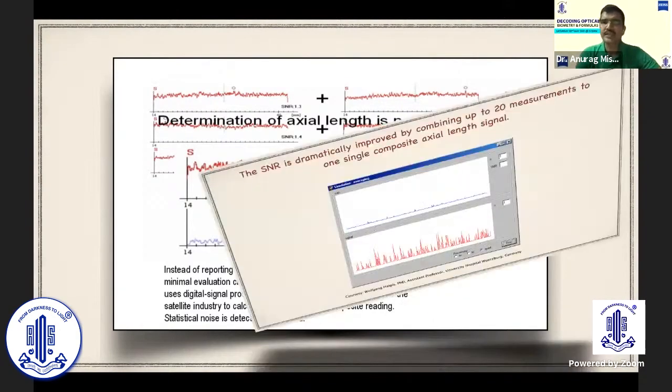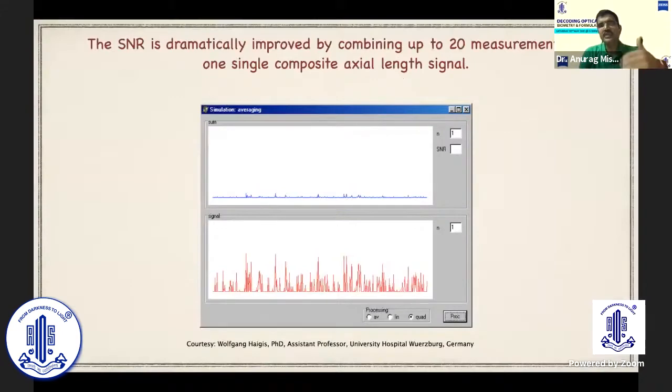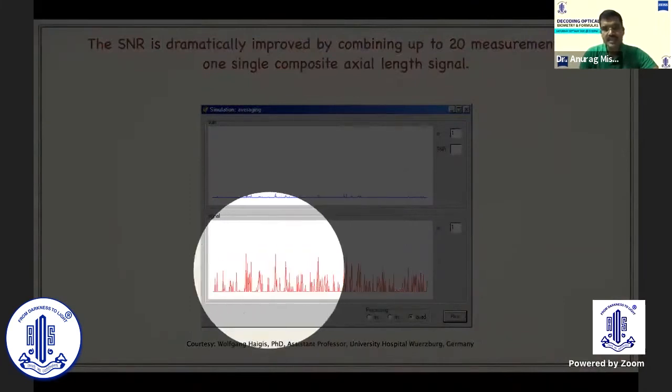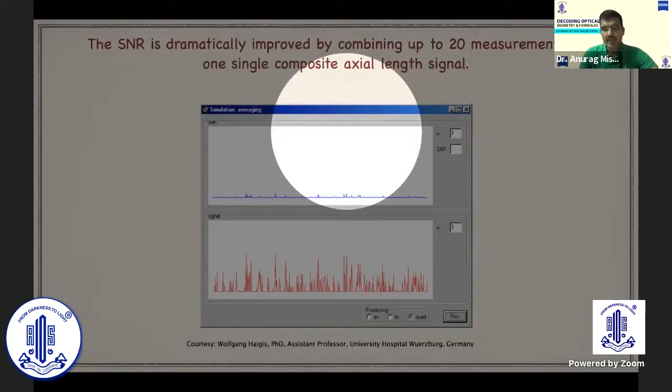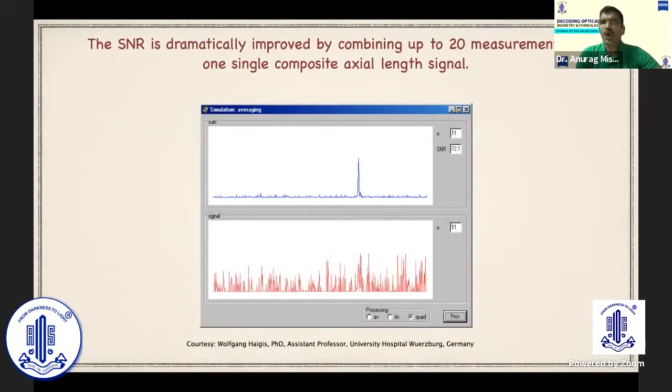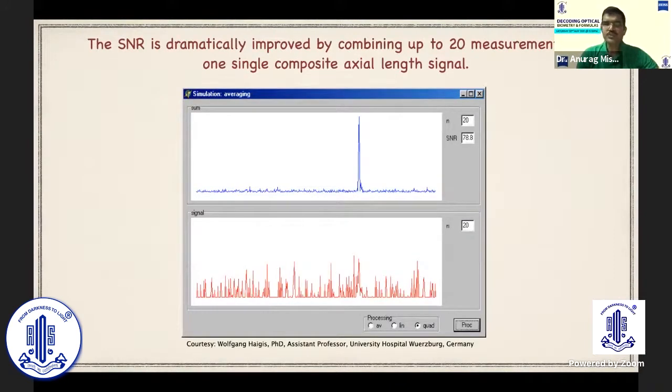It will be further exemplified in this picture. Keep an eye on these two columns right at the right hand corner. As we improve, as we go on taking repeated measurements from 1 to 20, keep an eye on the signal to noise ratio and you would see that this bizarre looking wave pattern now gives us a clear, unified, significantly tall retinal spike as the signal to noise ratio keeps on improving. So this was actually a breakthrough technology which was used by this machine to give us accurate measurements.